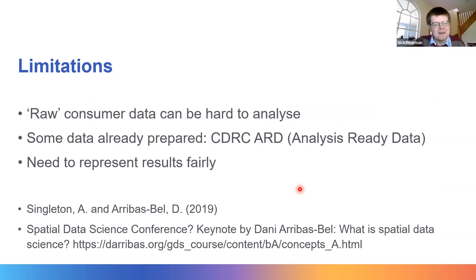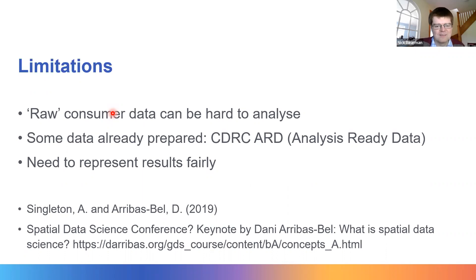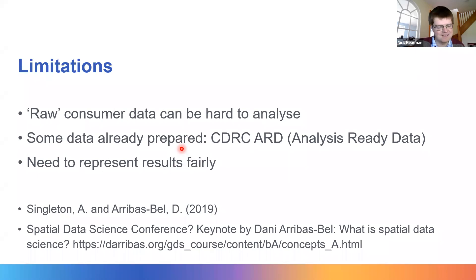There are some limitations to keep in mind alongside the benefits. Some raw consumer data can be quite hard to analyse — for example, the footfall data and bike hire data need quite a lot of work to generate useful results. Sometimes these datasets have already had some work done on them, creating what's called analysis-ready data — data that's been pre-processed and is ready to use. We also need to think about the representativeness of the data and represent our results fairly, acknowledging both what we found and the limitations. There's a very good presentation by Danny Dorling for the Spatial Data Science Conference exploring what we can do with consumer data and what the limitations are.